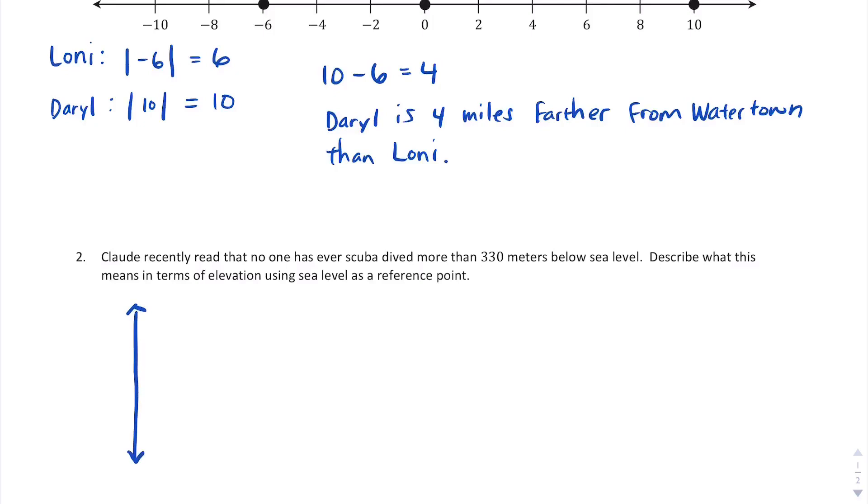In this sketch, we'll represent the water point at point zero. I went ahead and put the zero way up on top since I'm dealing with diving down into the water. And I'll go ahead and put this location as negative 330. It is below sea level, negative 330. And this is the lowest point that a diver can dive. Describe what this means in terms of elevation using sea level as a reference point. So nobody has ever dove below sea level more than 330 feet.